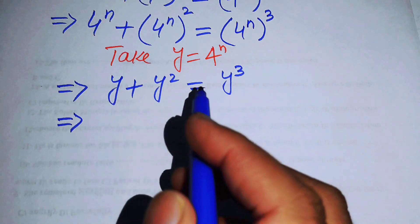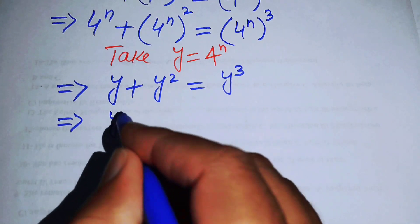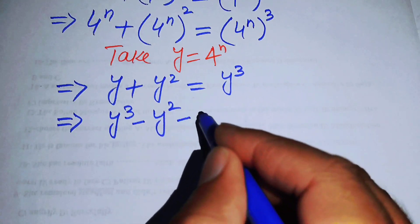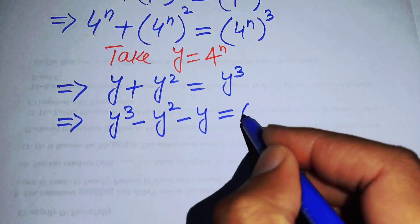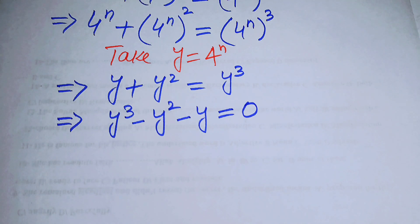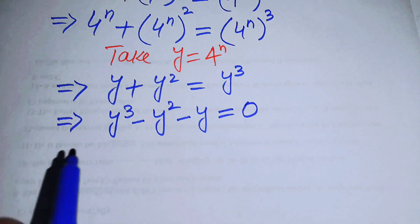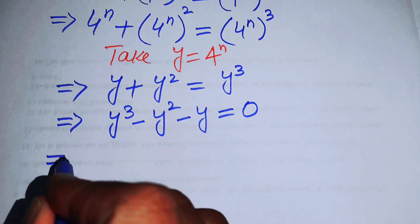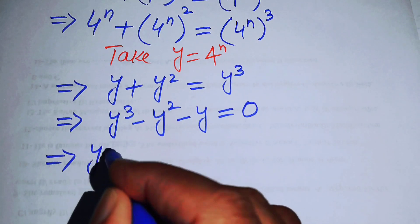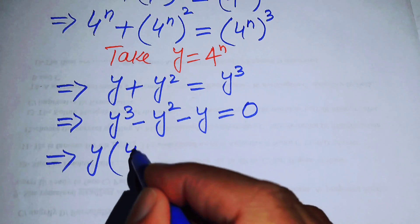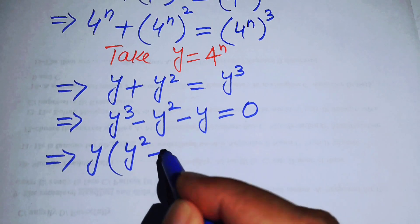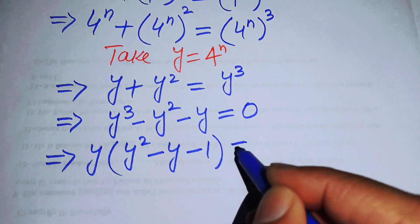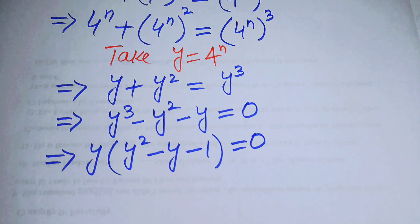Rearranging all terms to one side gives y cubed minus y squared minus y equals 0. In the next step, y is present in each term, so we factor out y and obtain y times (y squared minus y minus 1) equals 0.